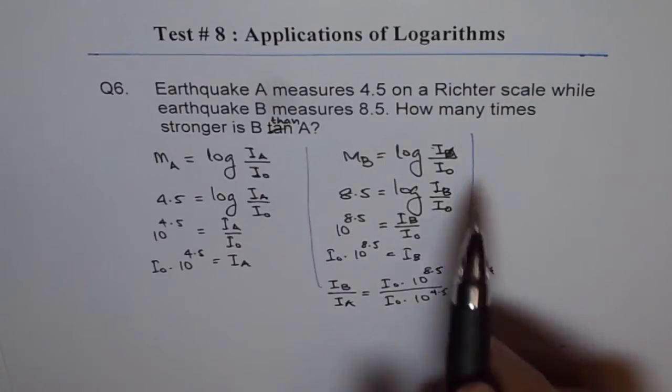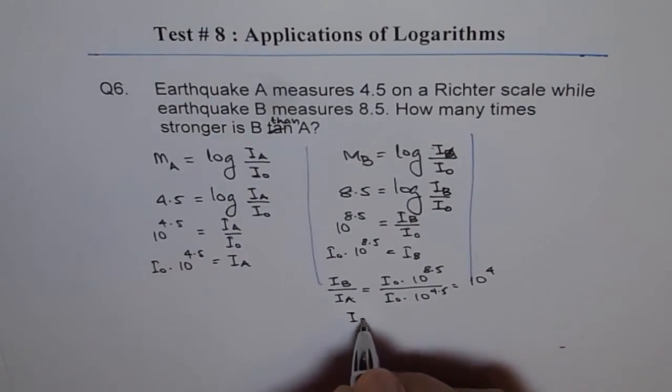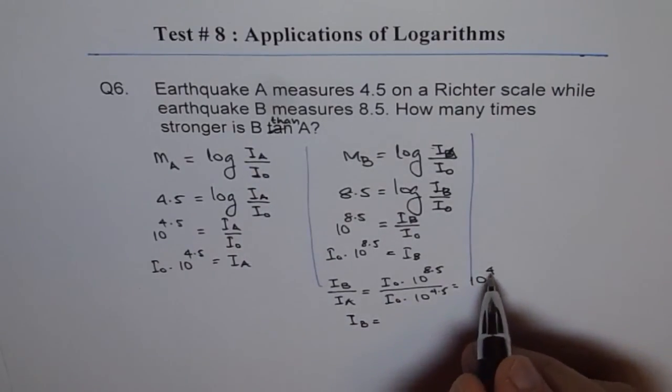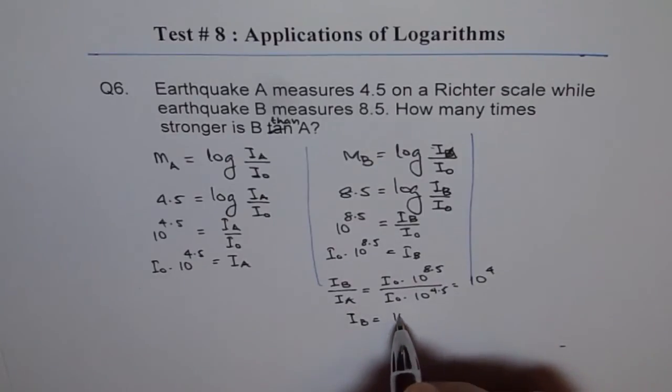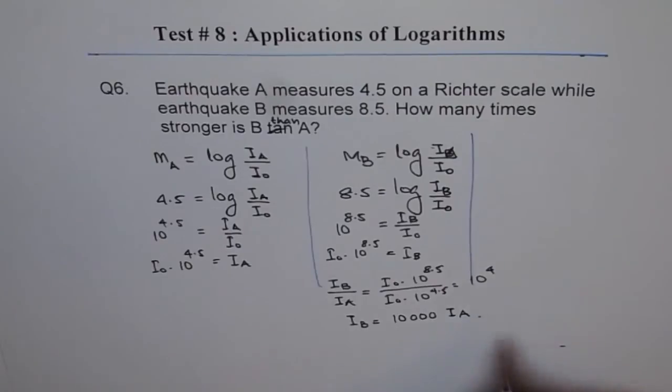Do you see that? That is how many times stronger is B. So, B is equals to 10 to the power of 4 times stronger than A or 10,000 times A. So, that is the answer. Thank you.